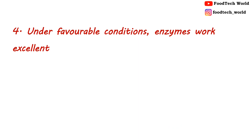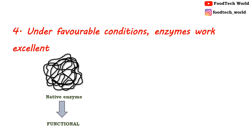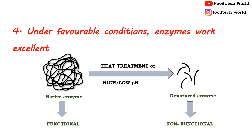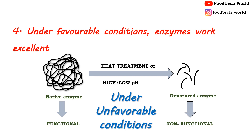Since enzymes are protein molecules, when they are exposed to unfavorable conditions like high temperature or high or low pH, the protein molecules start degrading — this process is called protein denaturation. Denatured protein loses its functionality. Similarly, when an enzyme is subjected to excessive temperature, high or low pH, or ionizing radiations, the enzyme becomes denatured. As they are made up of protein molecules, the proteins become denatured and enzyme activity is totally reduced, diminishing the enzyme's ability to catalyze reactions altogether.